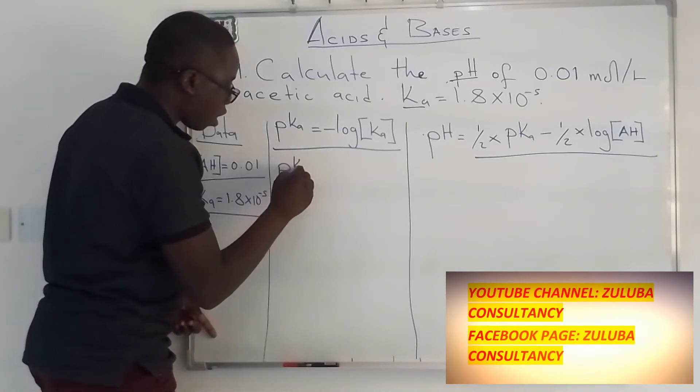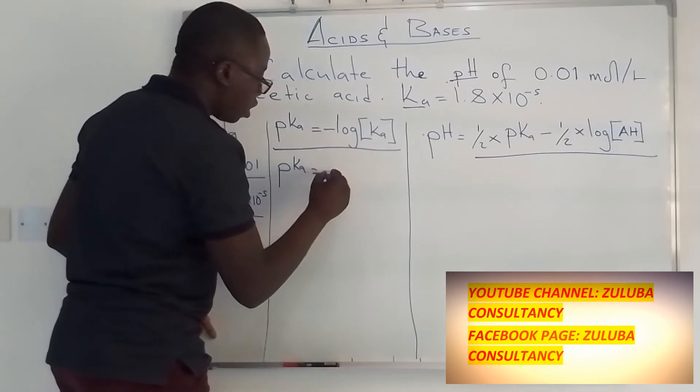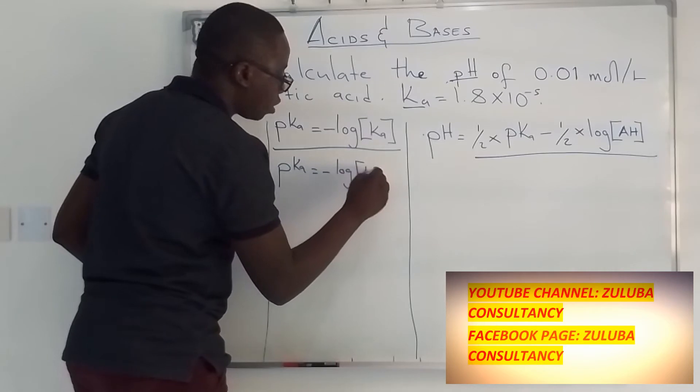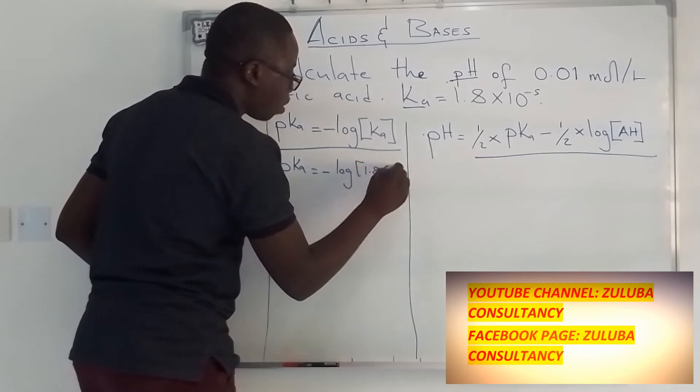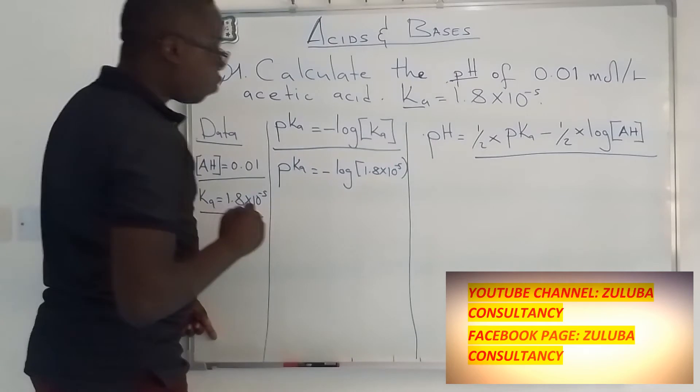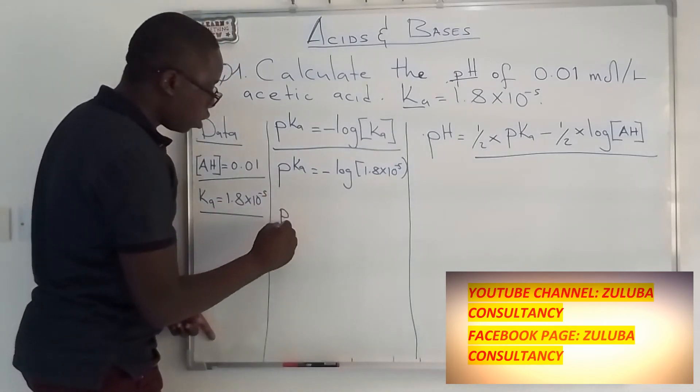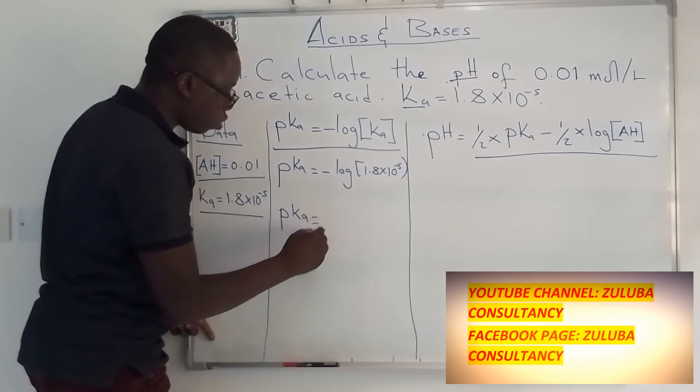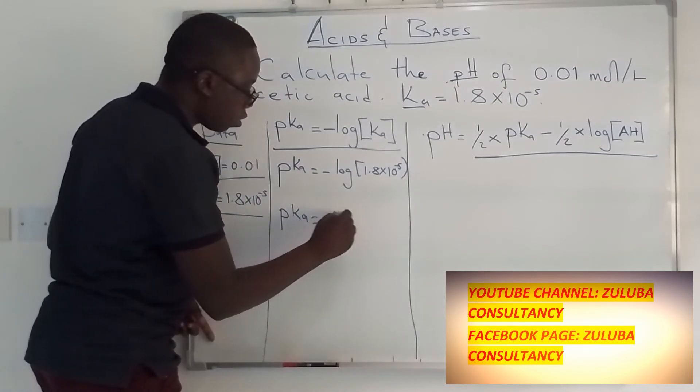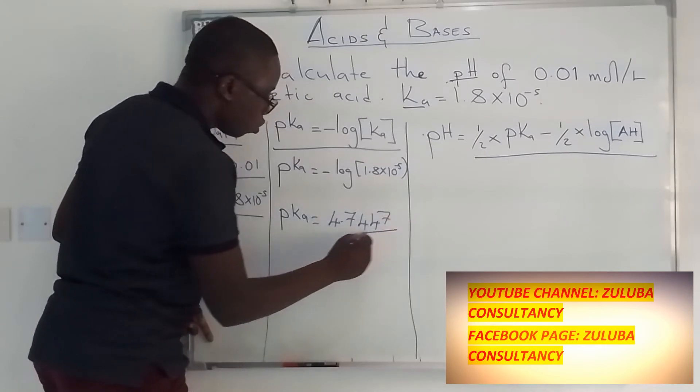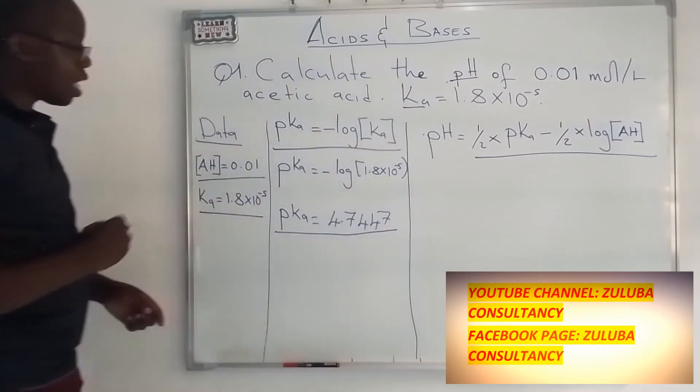So pKa is equal to negative log of 1.8 times 10 to the power negative 5. So negative log of 1.8 times 10 to the power negative 5, it should give us the pKa equal to 4.7447. So this is our pKa value.